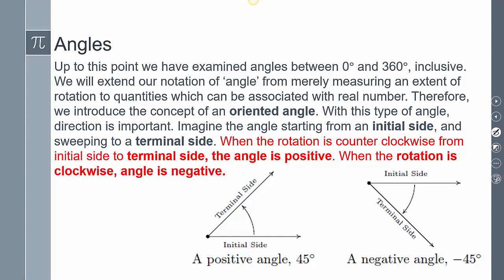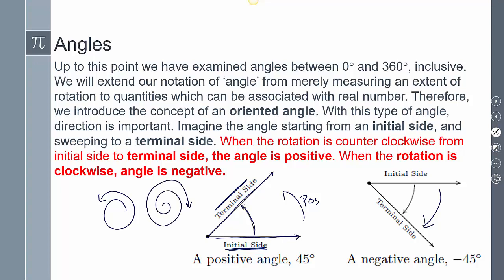It's important to think about how the angle is oriented. We say there's an initial side where the angle starts, it rotates, and where it ends up is called the terminal side. There's also a difference between the two types of rotation: counterclockwise is a positive rotation, and clockwise is a negative rotation.